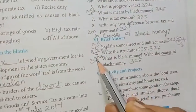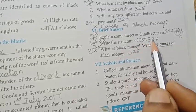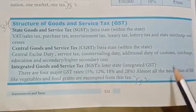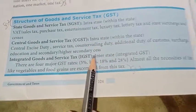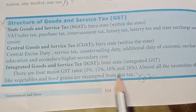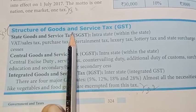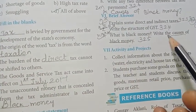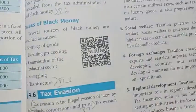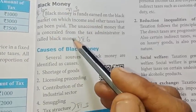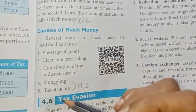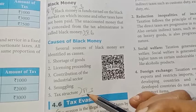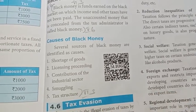Number two: write the structure of GST. Page number 324. Structure of Goods and Service Tax — detail the heading. Third: what is black money? Write the causes of black money. Page number 325. Black money — what are the causes of black money? Tax structure. Roman number 6, third one, answer. Three questions over.